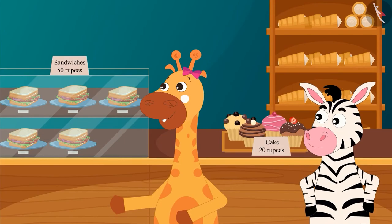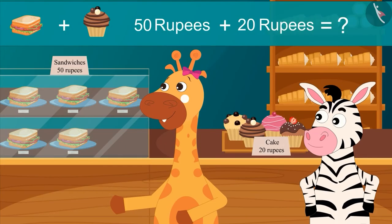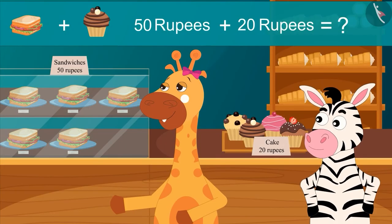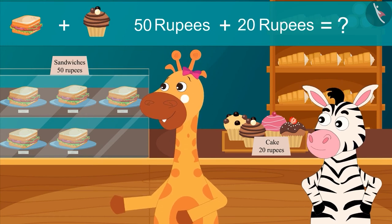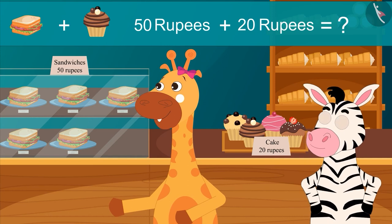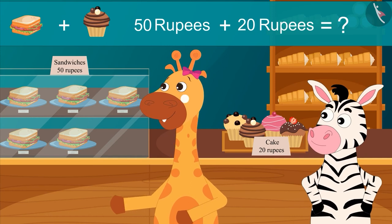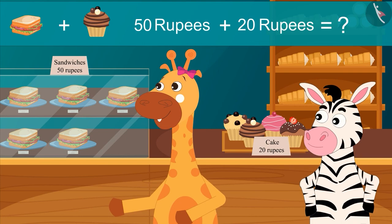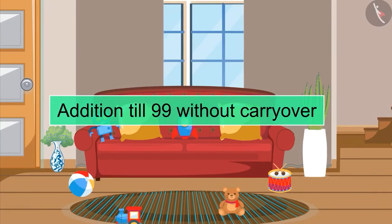Gaffee and Zoe went to a bakery to buy a few snacks. Zoe bought sandwiches for 50 rupees and Gaffee bought a cake for 20 rupees. How much money did they spend in the bakery? Children, find the answer to the question and share it with your friends and family. In this video we learned to do addition up to 99 without using carryovers.